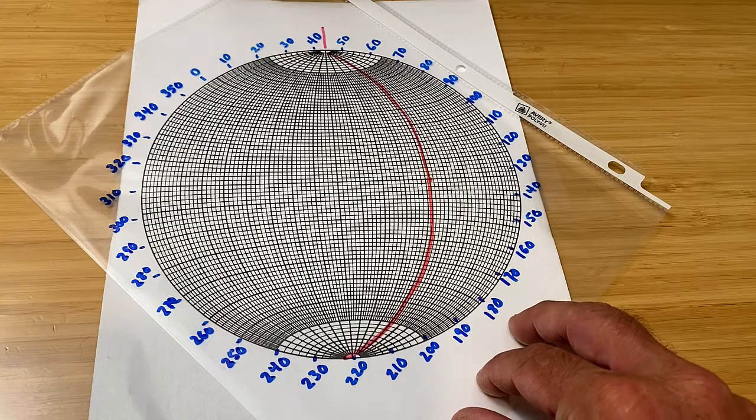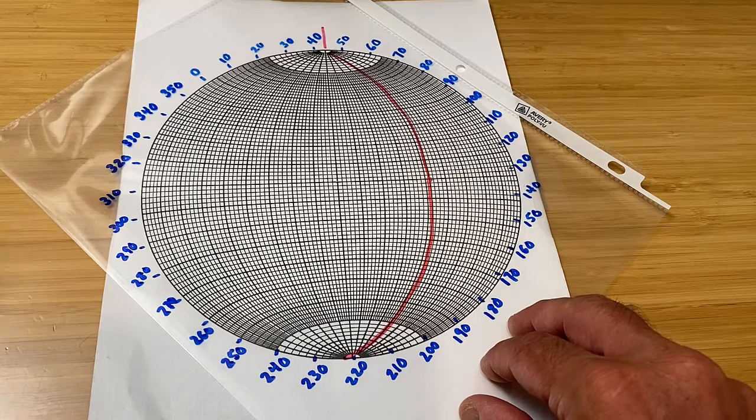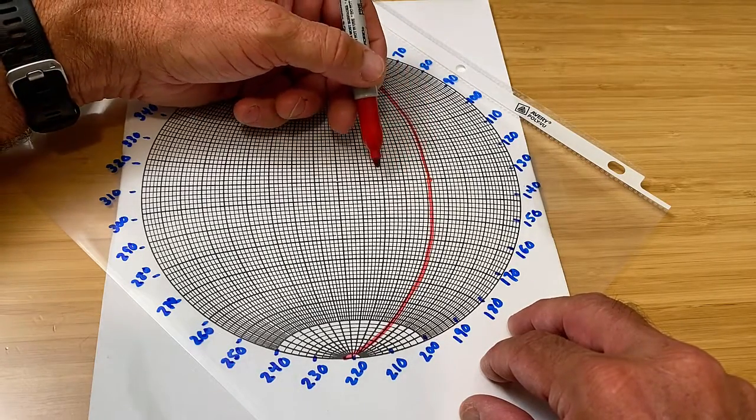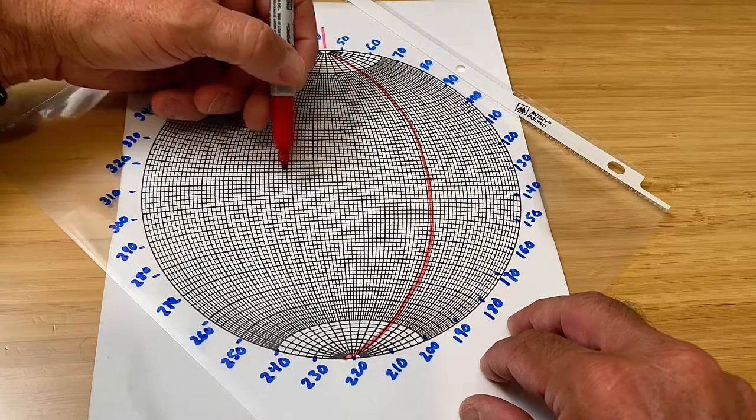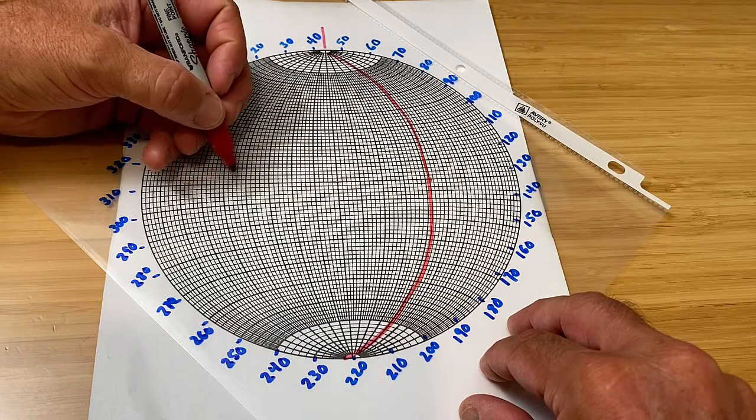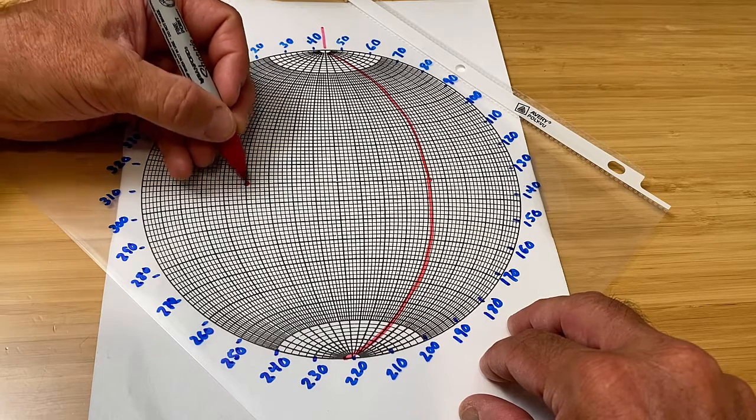So to return to our last stereonet, the pole to our bed with the strike of 45 and a dip of 45 degrees can be determined by going back to the position of the stereonet where we first plotted the dip. But in this case, we count 90 degrees from that great circle towards the middle of the bed, actually past typically the middle of the bed, until we get to 90 degrees.